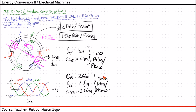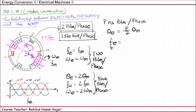From these two relationships, if we want to write the generalized relationship for p number of poles per phase: the electrical angle θe can be written as (p/2)·θm. Hence we can write: fe (electrical frequency) equals (p/2) times fm, where fm is the frequency of rotation of the rotating magnetic field — remember this rotation is a mechanical rotation. And ωe can be written as (p/2)·ωm.